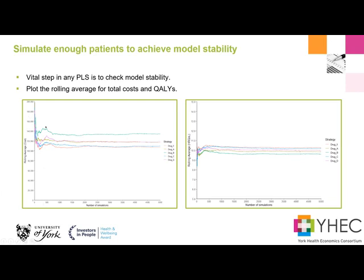Whereas if I'd only done 500 or so simulations from this cohort, we can still see there's a lot of variability and bouncing around. So without reaching stability, if I reran the model later on I could get completely different results. But this is where the balance of computing power and the number of patients to simulate comes in.